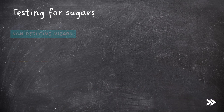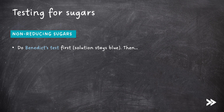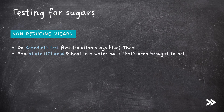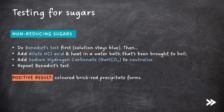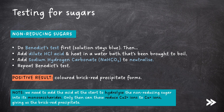For non-reducing sugars, first carry out the Benedict's test as before, just to confirm that it is not a reducing sugar — the Benedict's solution should stay blue. Then add dilute hydrochloric acid and heat in a water bath brought to boil. Add sodium hydrogen carbonate to neutralise. Then repeat the Benedict's test, and this time a brick-red precipitate should form. Note that we need to add the acid to hydrolyse the non-reducing sugar into its monosaccharides — only then can these reduce Cu²⁺ ions into Cu⁺ ions, giving the brick-red precipitate.